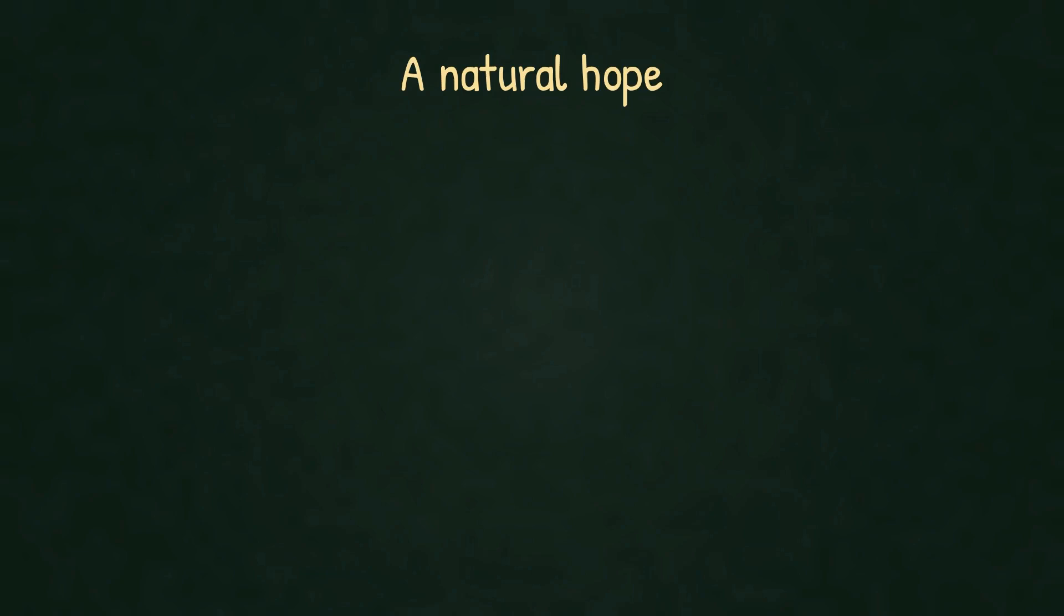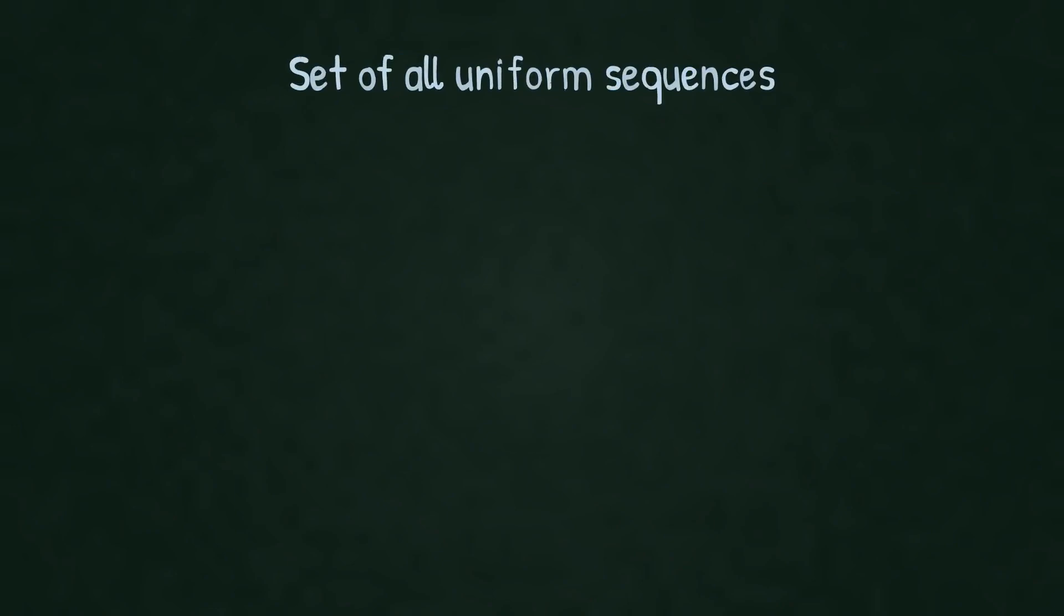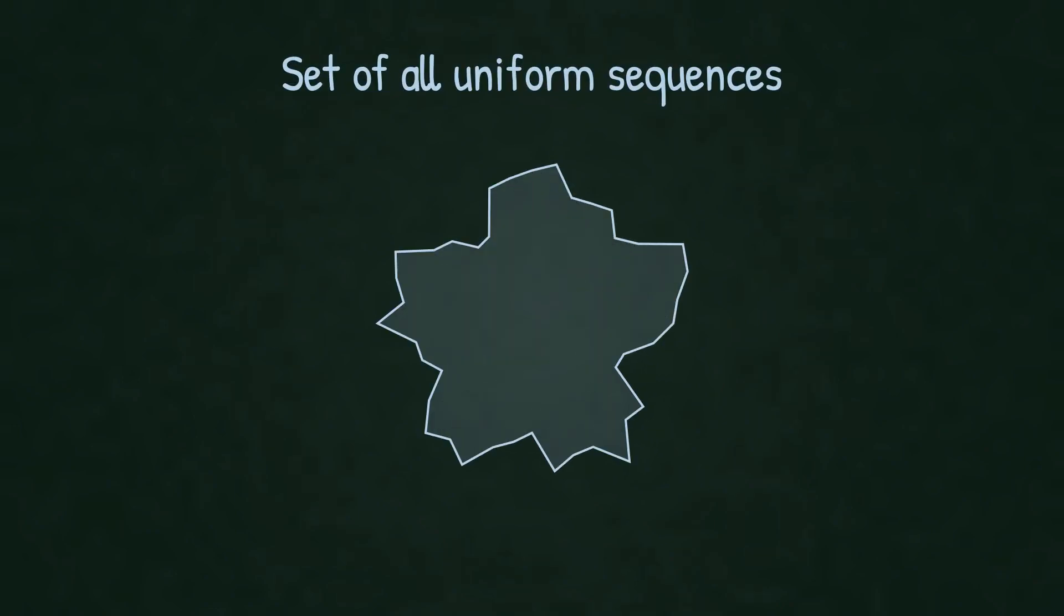But there's hope. Maybe these pathological sequences, the ones that cause problems, are themselves negligible. Think about it. Uniform sequences form a vast space. Perhaps the problematic ones are just a tiny negligible subset, like finding a needle in an infinite haystack. If that's true, we could simply exclude them and get a consistent integral definition.